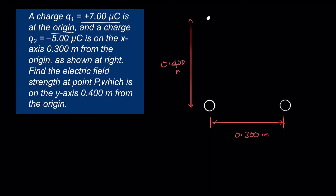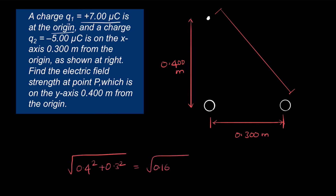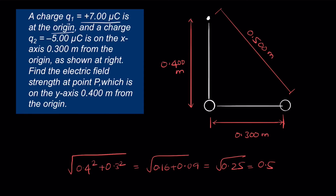Using the Pythagorean theorem, we can find the distance from q2 to the point on the y-axis: √(0.4² + 0.3²) = √(0.16 + 0.09) = √0.25 = 0.500 meters. So q1 = +7 microcoulombs = 7×10⁻⁶ C, and q2 = -5 microcoulombs = -5×10⁻⁶ C.